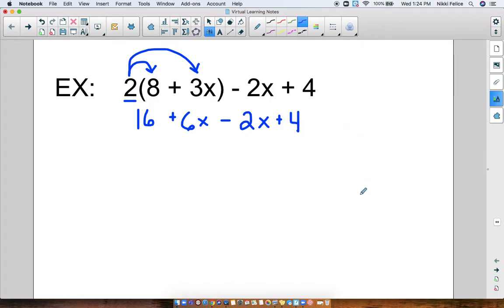Okay, now that I distributed, I can go through and combine all my like terms. So I see 6x minus 2x, which is 4x. I can bring that down. But then I also see 16 plus 4. Well, 16 plus 4 is 20. So I'm going to have 4x plus 20.